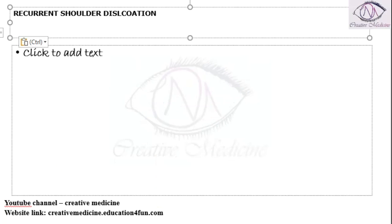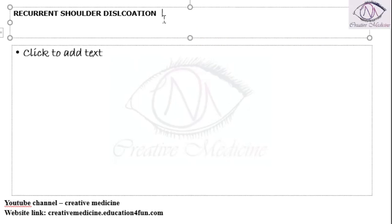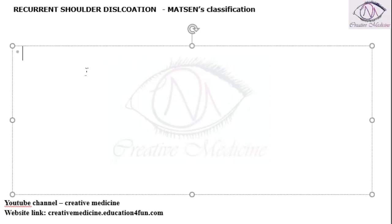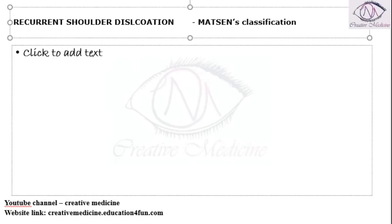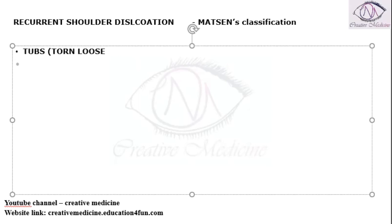In recurrent shoulder dislocation, we have the MASTENS classification. According to this classification, we have two categories: first, TUBS — Traumatic Unidirectional Bankart Surgery; and second, AMBRI — Atraumatic Multidirectional Bilateral Rehabilitation Inferior capsular shift.